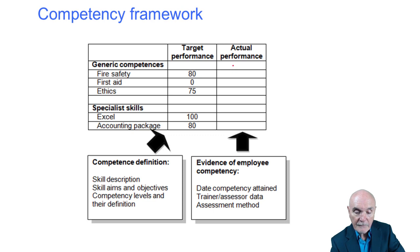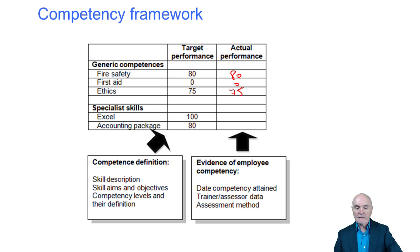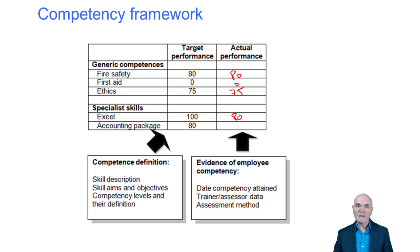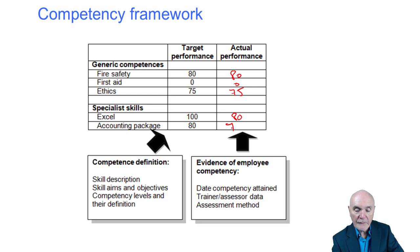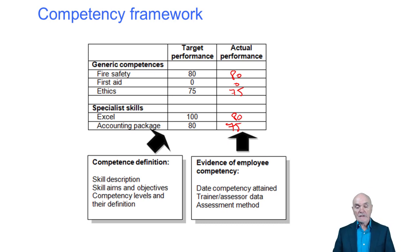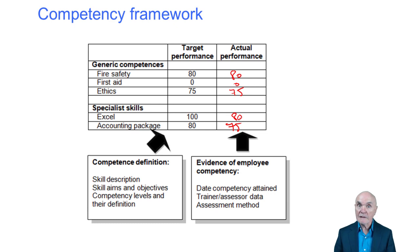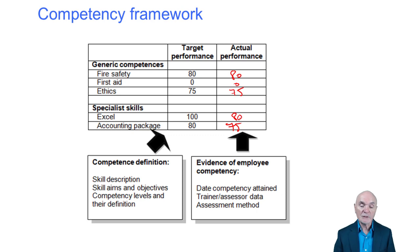Maybe we're absolutely fine on most competences, but a manager is a little dubious about how good we are at Excel — perhaps we can't do pivot tables or control graphs. They reckon we may be nearly there on the accounting package. This gives us insight into where we need to make up the gap and may indicate where formal training is needed, which we could request if there's no other way to plug those gaps.